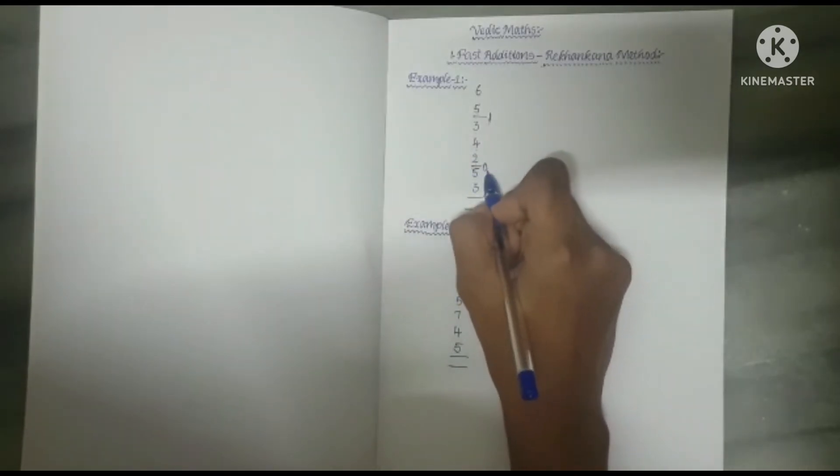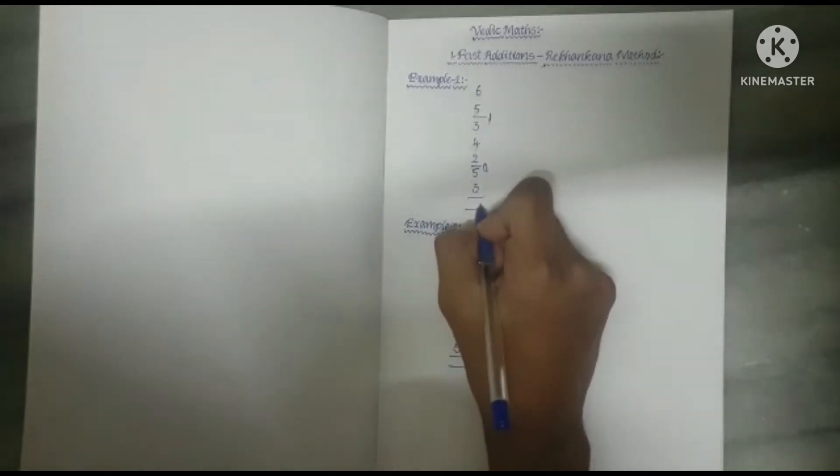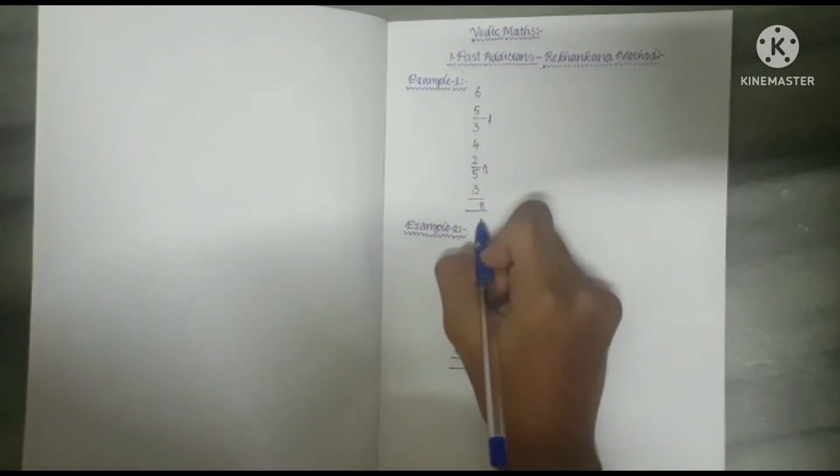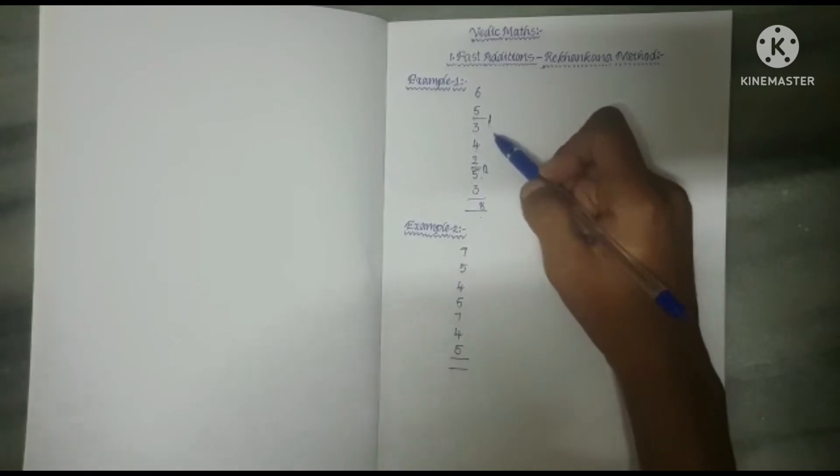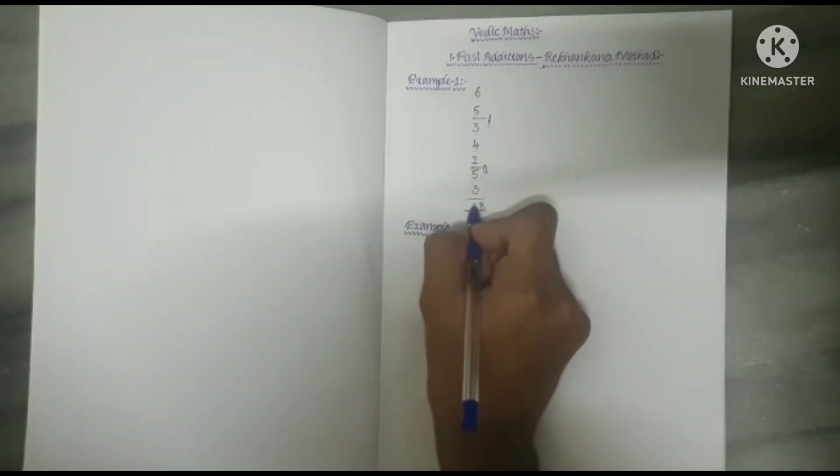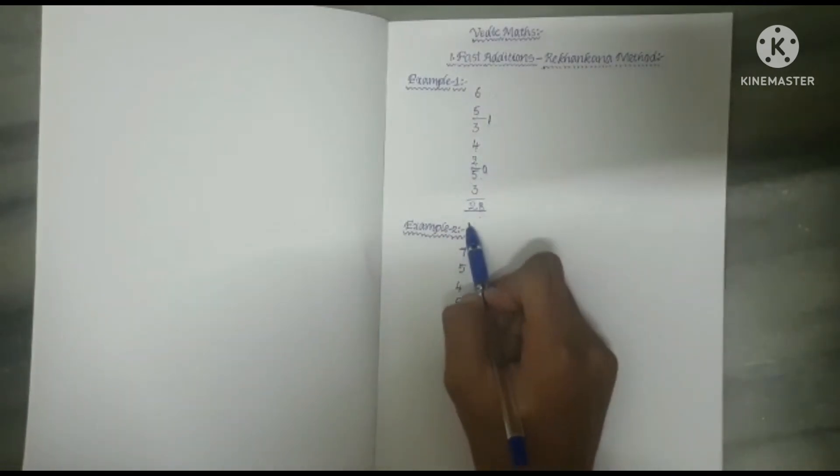So we have to carry forward the 0. 0 plus 5 is equal to 5. 5 plus 3 is equal to 8. So we have to write 8 here. And in this example we have carried forward 2 numbers. So we have to write 2 in left side of 8. Now the sum of this total is 28.